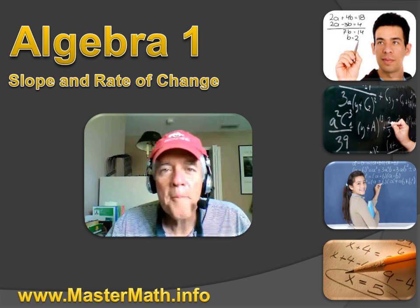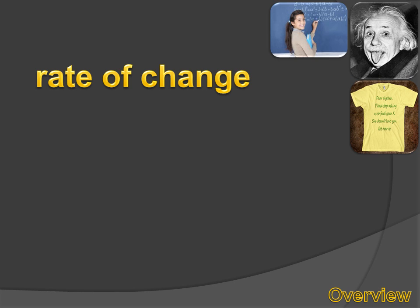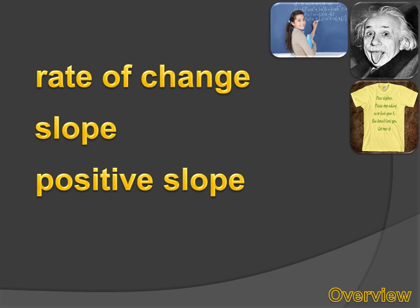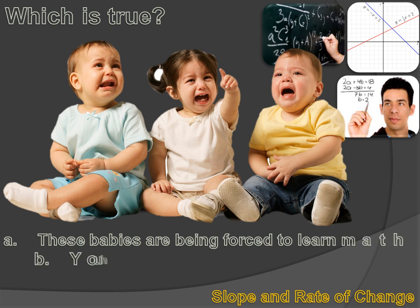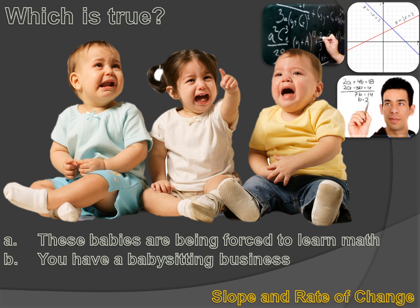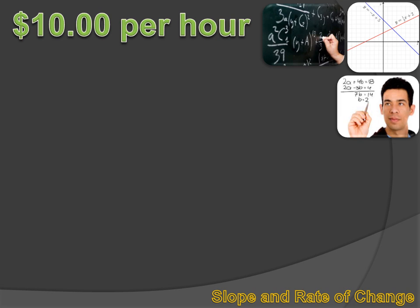Okay, this lesson's about rate of change, slope, positive slope, and negative slope. And we're going to start with a multiple choice question. Choose either A or B. A, these babies are being forced to learn math. Or B, you have a babysitting business.